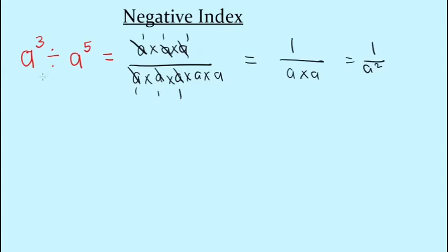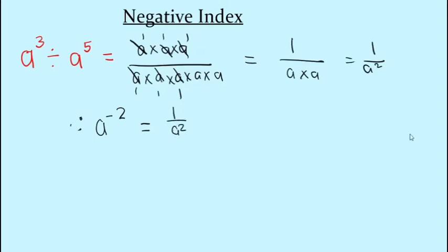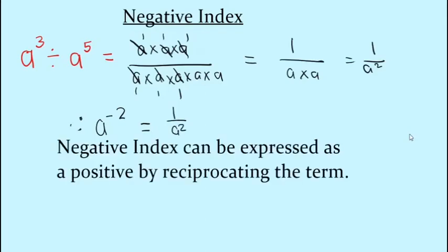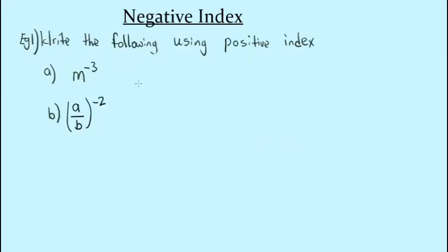We also know that when dividing two terms with the same base, we subtract the powers. That would be three minus five, giving us a to the negative two. So we can conclude that a to the negative two is equal to one over a squared. The law states: a to the negative m is equal to one over a to the m power.